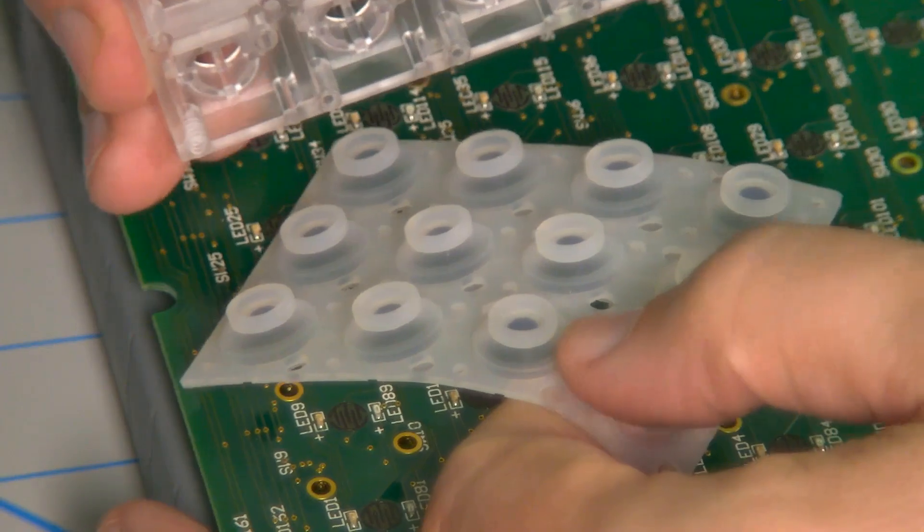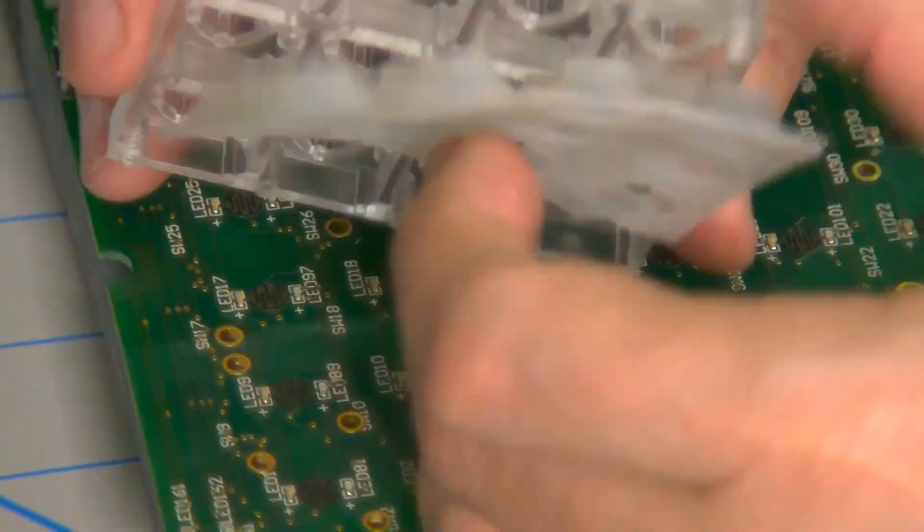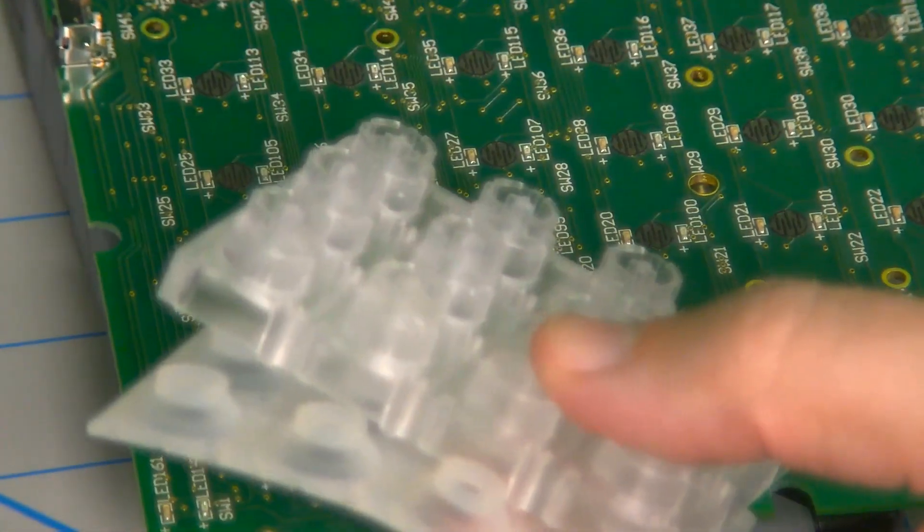Below that is our elastomeric membrane with a carbon button on it that actually makes contact on the circuit board.